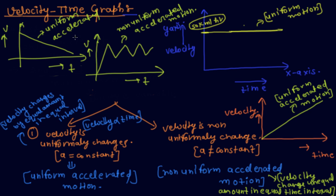For uniform accelerated motion where slope is negative, velocity is decreasing. And the non-uniform accelerated motion is represented by a zigzag-like graph. So I hope you understand what is the velocity-time graph and how to draw it for different types of motion.